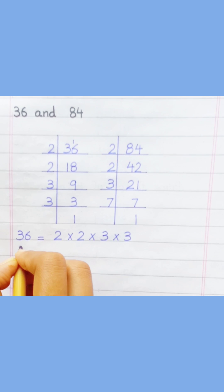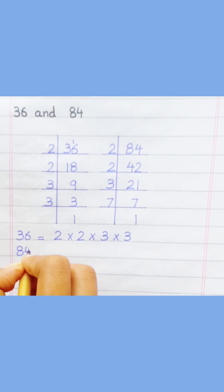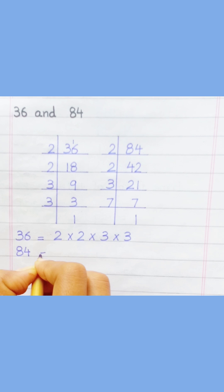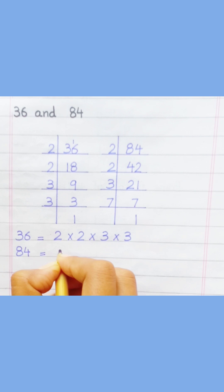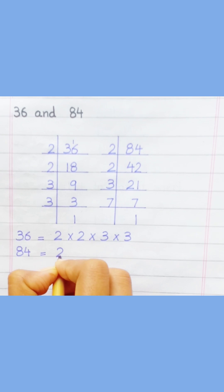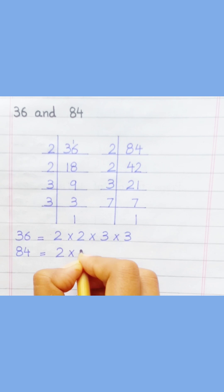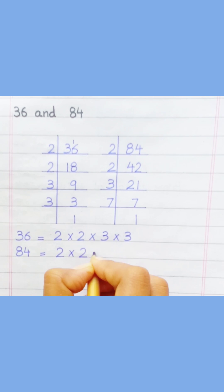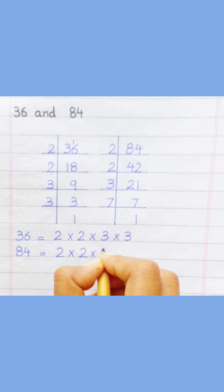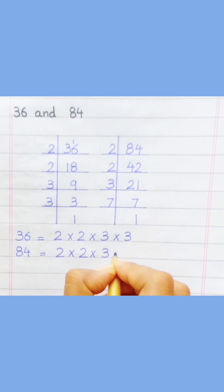Eighty-four equals two multiply two multiply three multiply seven.